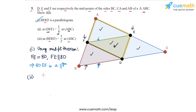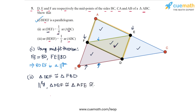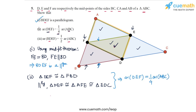From the first part, the fact that BDEF is a parallelogram lets us conclude that triangle DEF is congruent to triangle FBD, because the diagonal of a parallelogram divides it into two congruent triangles. Similarly, triangle DEF is congruent to triangle AFE and also congruent to triangle EDC. So all four small triangles are congruent, their areas are equal, and this means that the area of DEF is one-fourth the area of ABC. That proves part two.